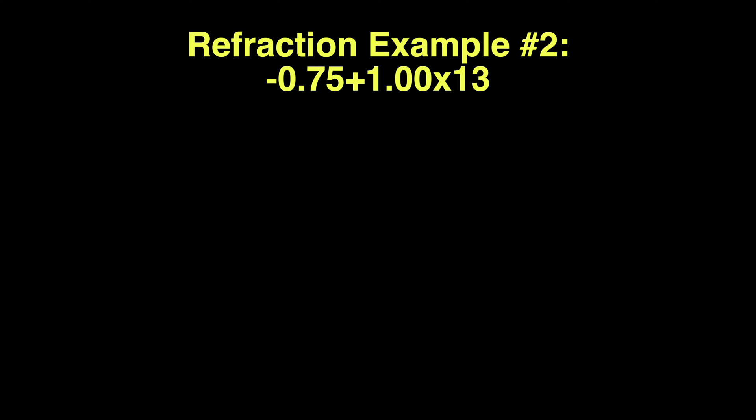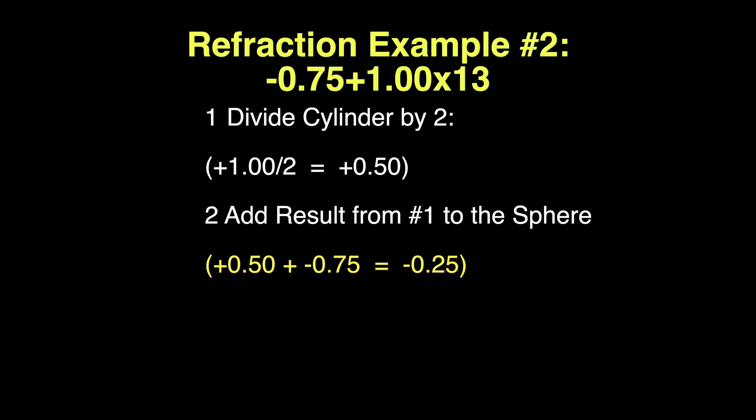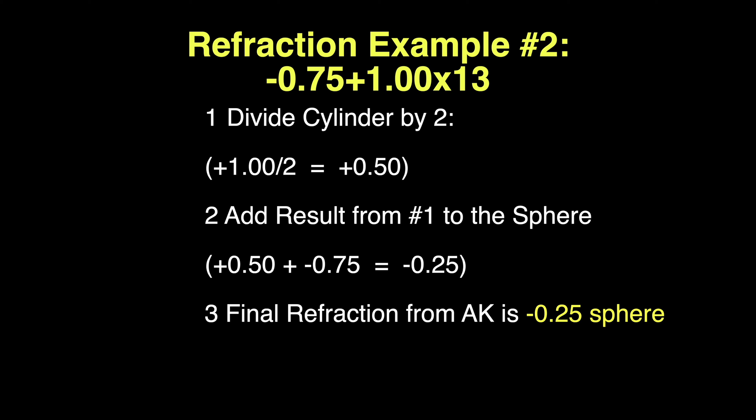The second refraction: minus 0.75 plus 1 at axis 13. Here again, we look at the cylinder — plus 1 diopter. We divide the cylinder by 2, which is plus 0.5. We add that result, the plus 0.5, to the sphere. So plus 0.5 added to minus 0.75 equals minus 0.25 sphere. The final refraction, if we treat that minus 0.75 plus 1 axis 13 with AK, should be minus 0.25 sphere.